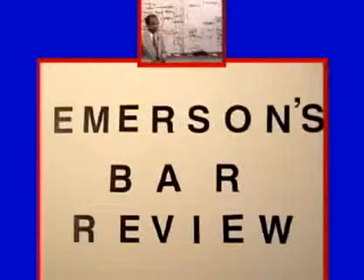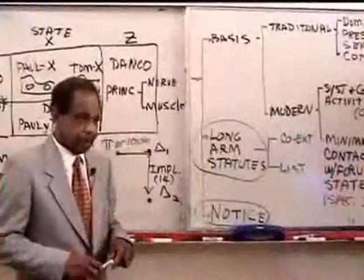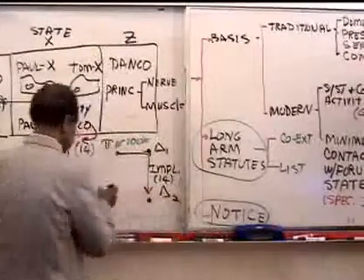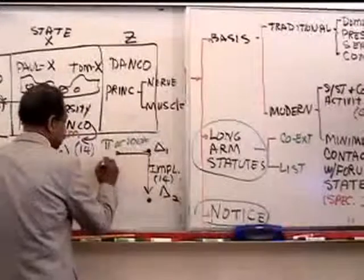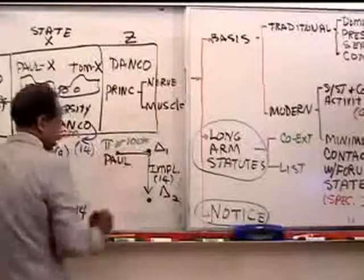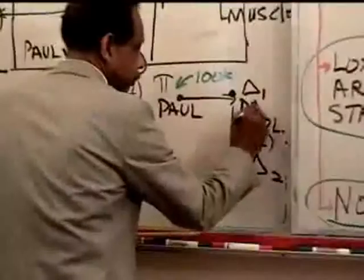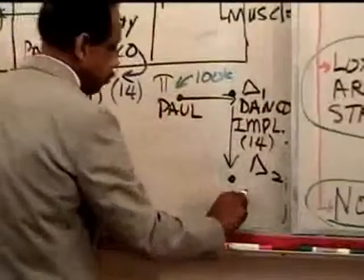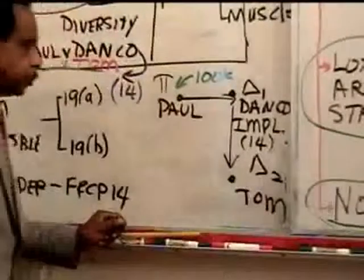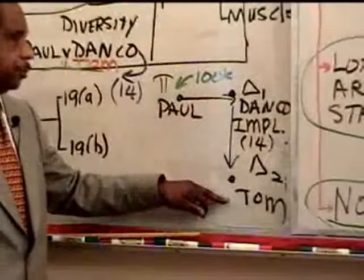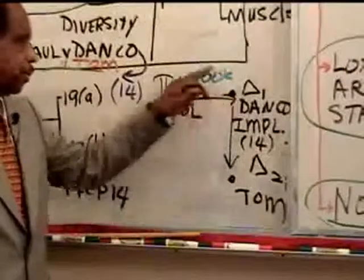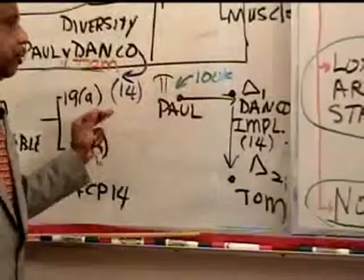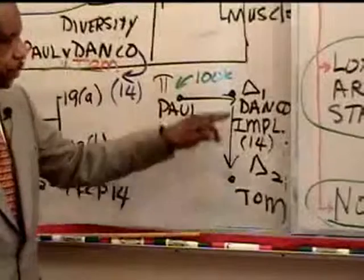In our case, what we have in this diagram is that Paul is suing Danco, and Danco is saying to Paul, you should have sued Tom also. Well, Danco can implead Tom. Danco is saying Paul should have sued Tom because we're going to get burned if you don't. But it's not true. Paul did not need to sue Tom, because Danco can do it himself.